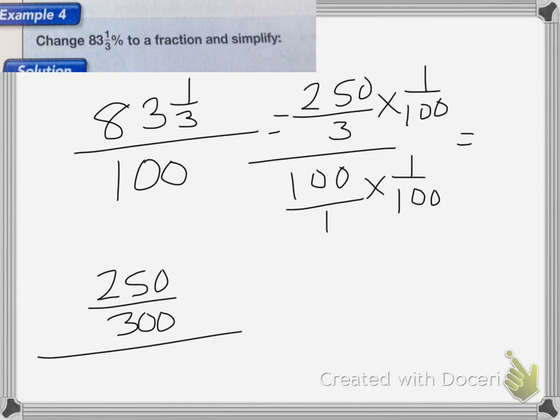And all that over 1, which is equal to, once I reduce 250 over 300, it reduces down to 5 sixths. And that's my answer.